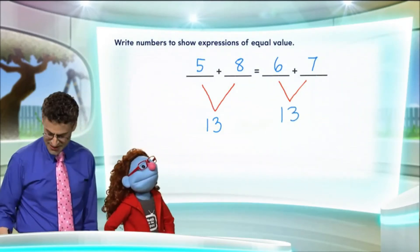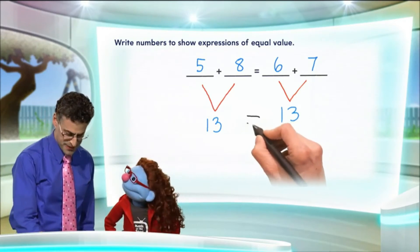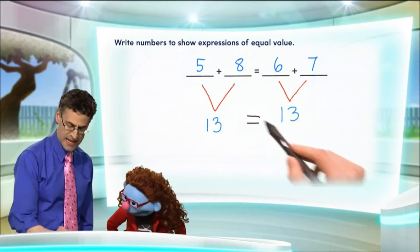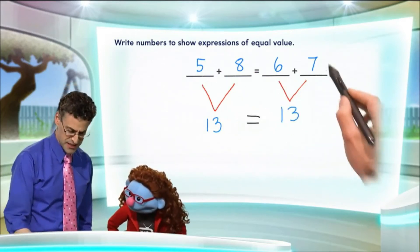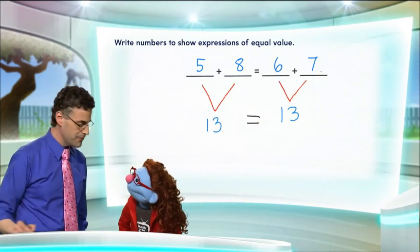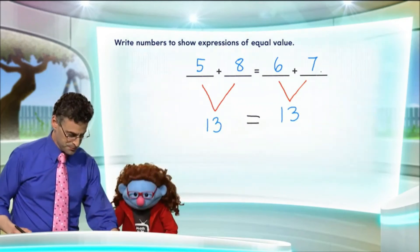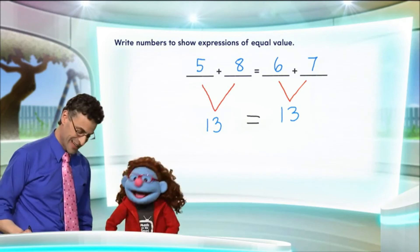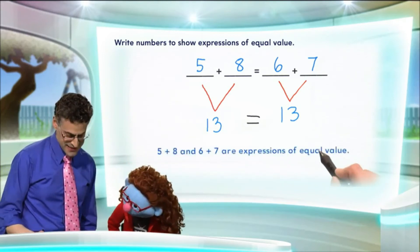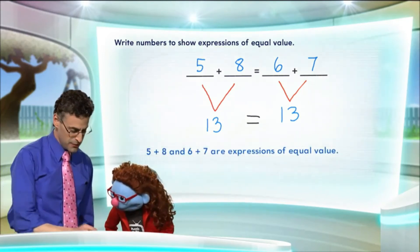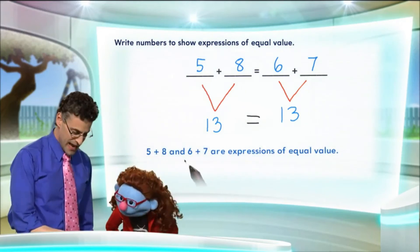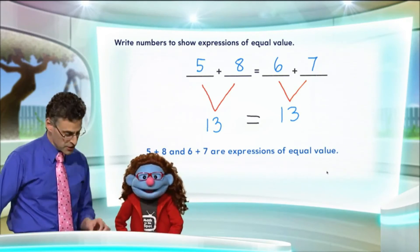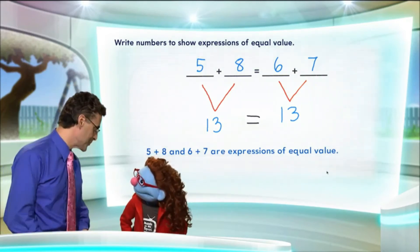So, you're absolutely right, and since we see that 13 equals 13, that tells us that this expression, 5 plus 8, is actually equal to this expression, 6 plus 7. They have the equal value. Mm-hmm! And so what we see is that the expression 5 plus 8 and the expression 6 plus 7 are expressions of equal value. They look different, but they actually are equal.